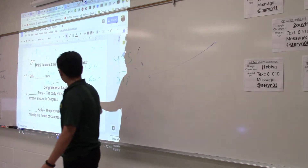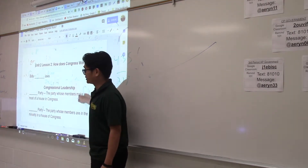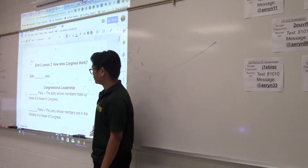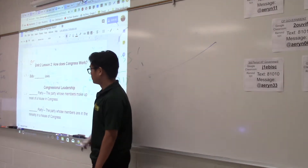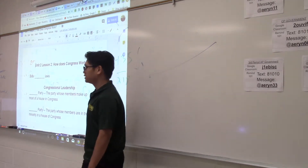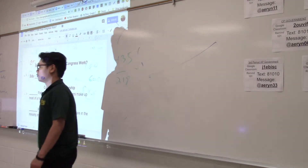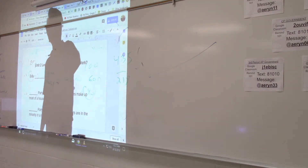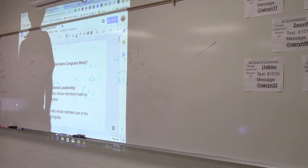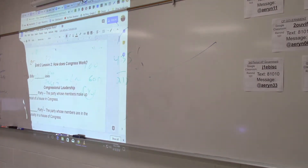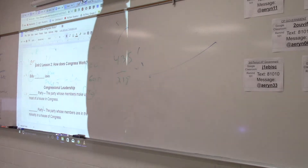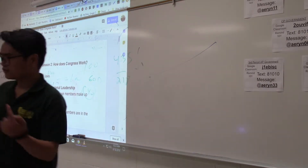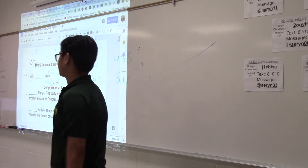The other party — an example being the Republicans with only 40 members in the Senate — would be the minority party. Sometimes there are independents in the Senate and the House of Representatives, but very rarely. Usually it's Democrats and Republicans fighting for the majority.